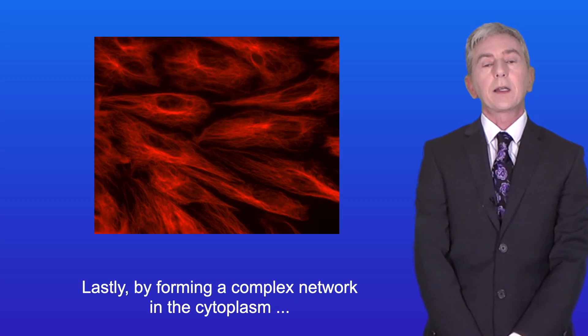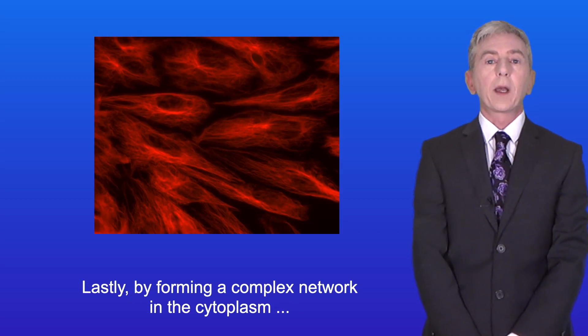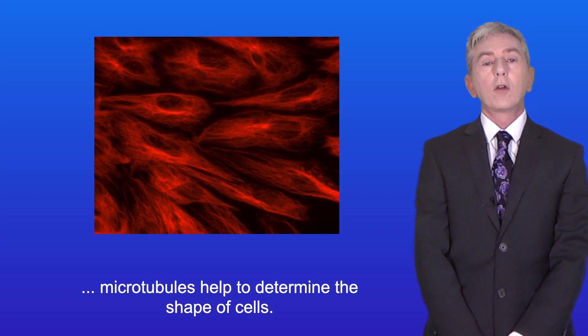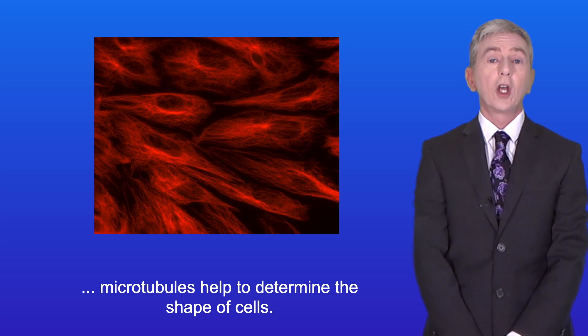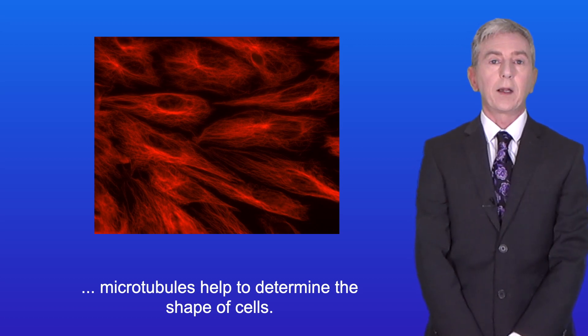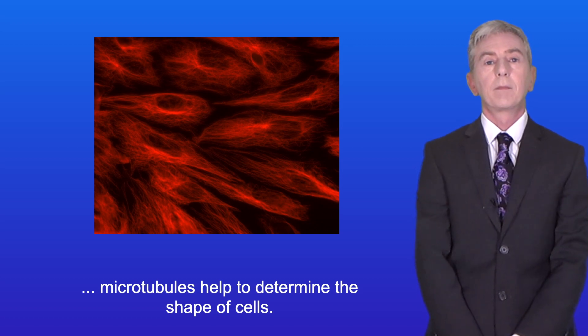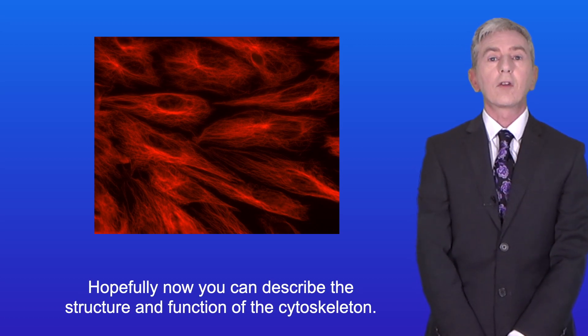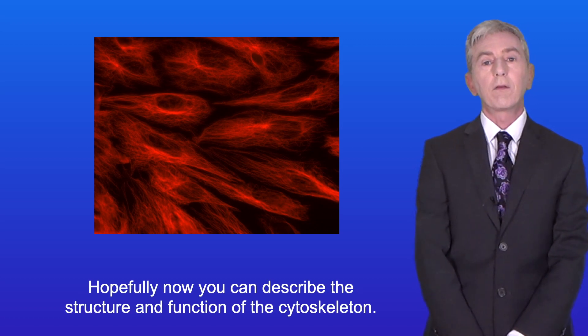And lastly, by forming a complex network in the cytoplasm, microtubules help to determine the shape of cells. So hopefully now you can describe the structure and function of the cytoskeleton.